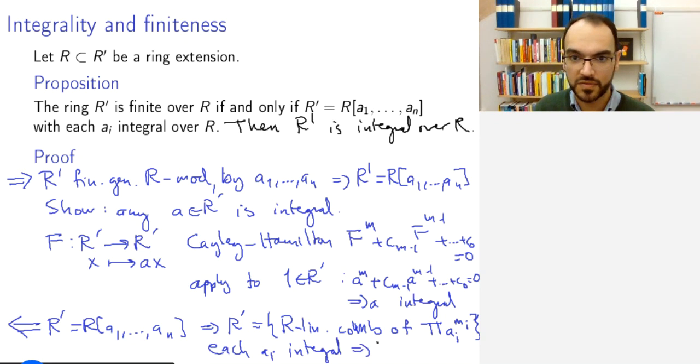But then because each a_i is integral, we can truncate. What does this mean? This means that we can stop after a finite specific m_i for each a_i. So the module R' is generated by only finitely many of these products already, and this proves that it is finite. So if the ring R' is finite, then it is integral, and if it's generated by integral elements, then it is finite.